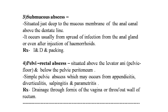The third type is the submucous abscess, situated just deep to the mucous membrane of the anal canal above the dentate line. It occurs from spread of infection from the anal glands and after injection treatment of hemorrhoids. Treatment is I&D and packing. The fourth type is the pelvic rectal abscess, situated above the levator ani and below the pelvic peritoneum, which may occur from appendicitis, diverticulitis, salpingitis, and perimetritis. Treatment is drainage through the fornix of the vagina or through the wall of the rectum.